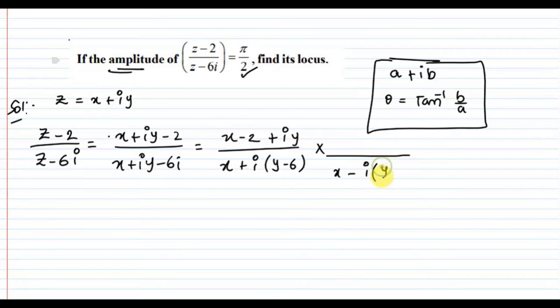Multiply numerator by (x - i(y - 6)) and denominator by (x - i(y - 6)). This gives us (a + b)(a - b) equals a² - b² form. So we get x² minus i² times (y - 6)² in the denominator.